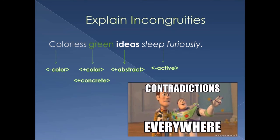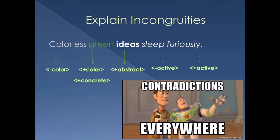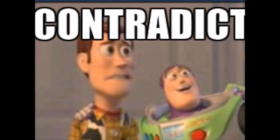Then we have 'furiously' — plus active — meaning you have to be active to do something furiously. But sleep is an inactive action, so that's another contradiction, as Woody and Buzz Lightyear here are illustrating. Semantic features help us explain these contradictions: if you have minus color and plus color in the same sentence, the sentence is semantically wrong — it simply can't happen in semantics.